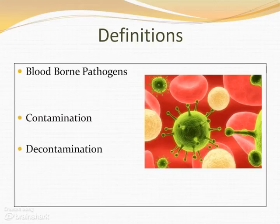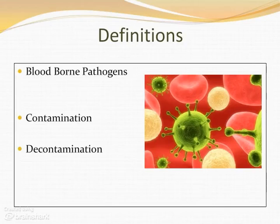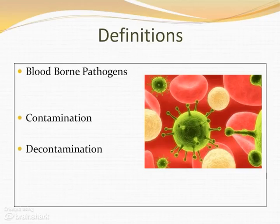Let's go over some definitions. Blood-borne pathogens are small organisms such as viruses and bacteria that can cause disease. They pass from one person to another through infected materials such as blood and body fluids. Contamination is the presence of blood or other potentially infectious materials. Decontamination is using physical or chemical means to remove, destroy, or render safe potentially infectious materials.